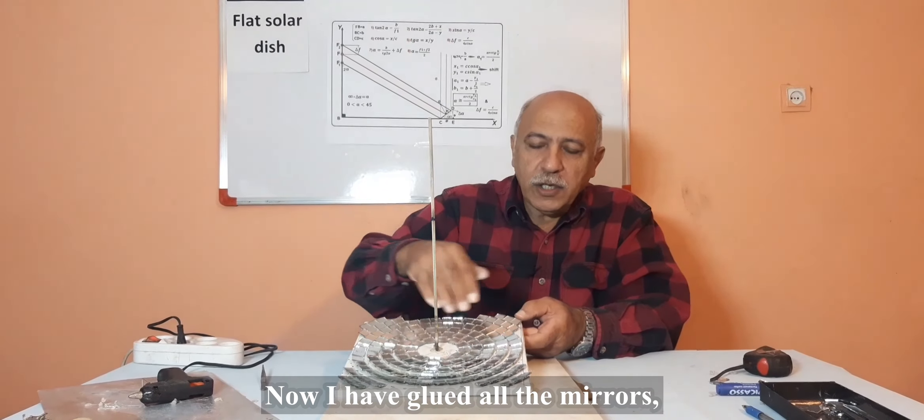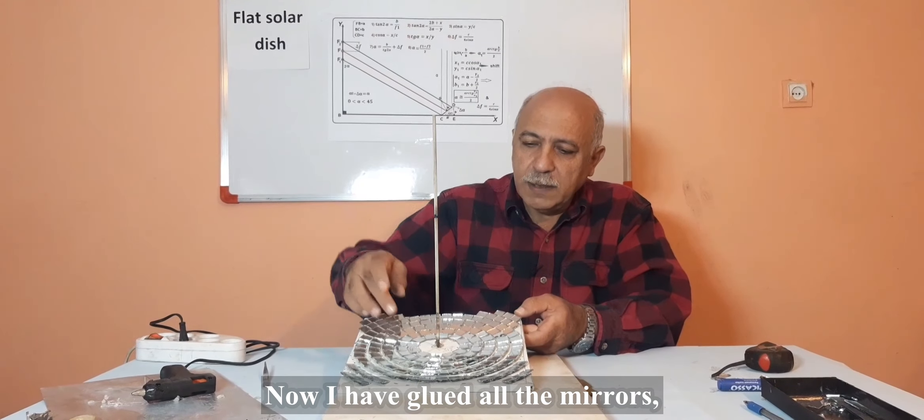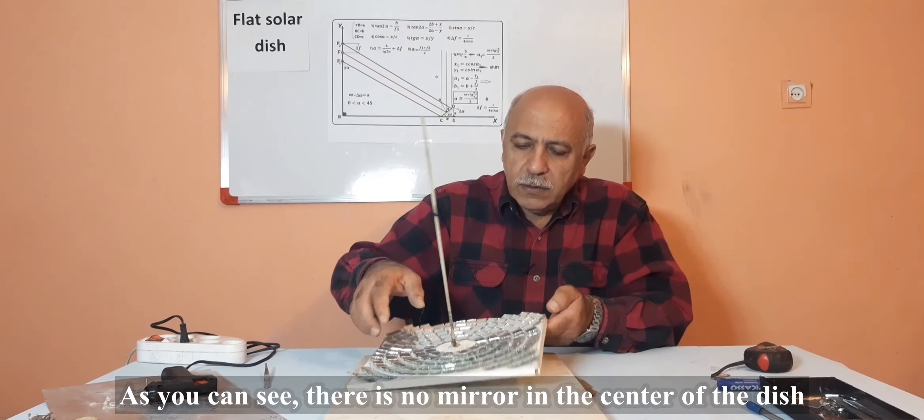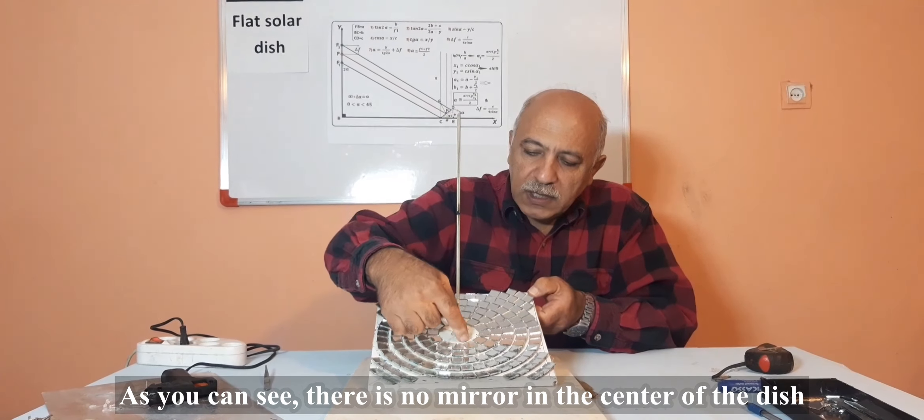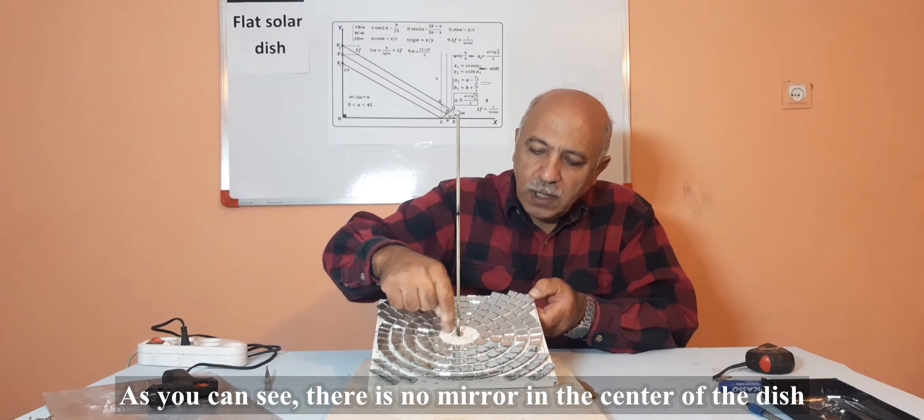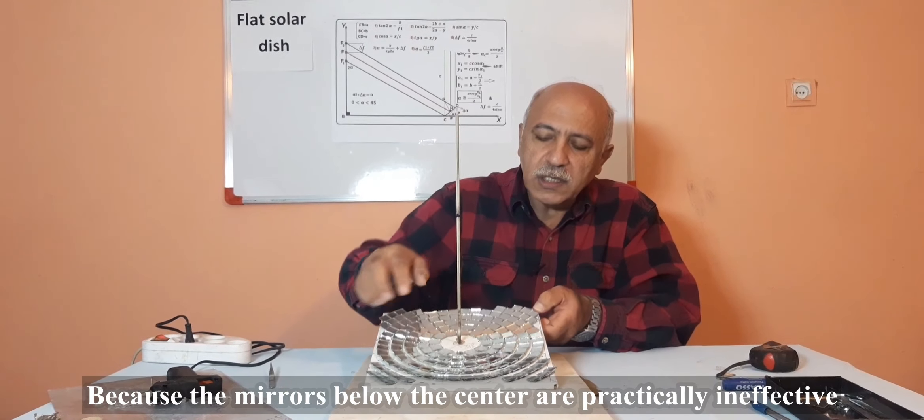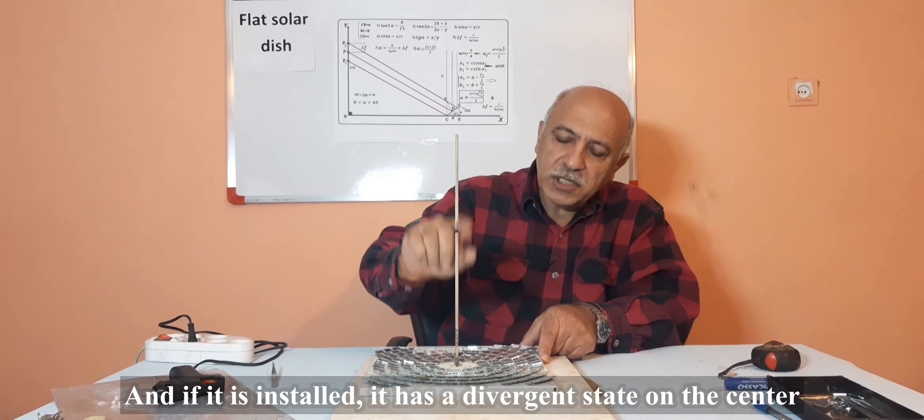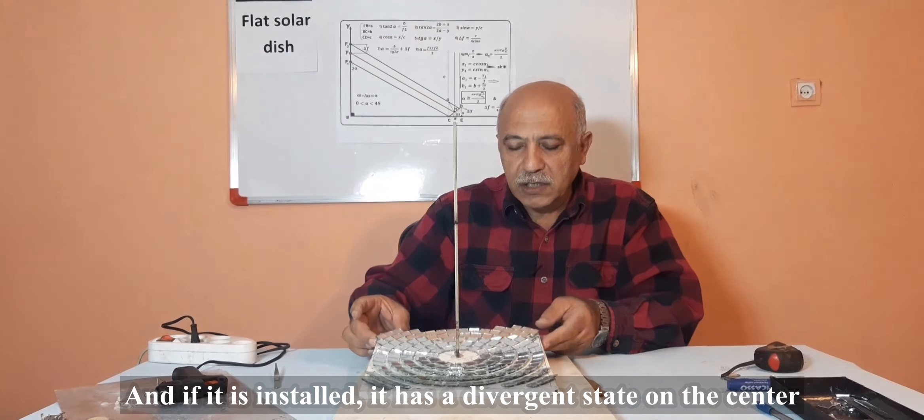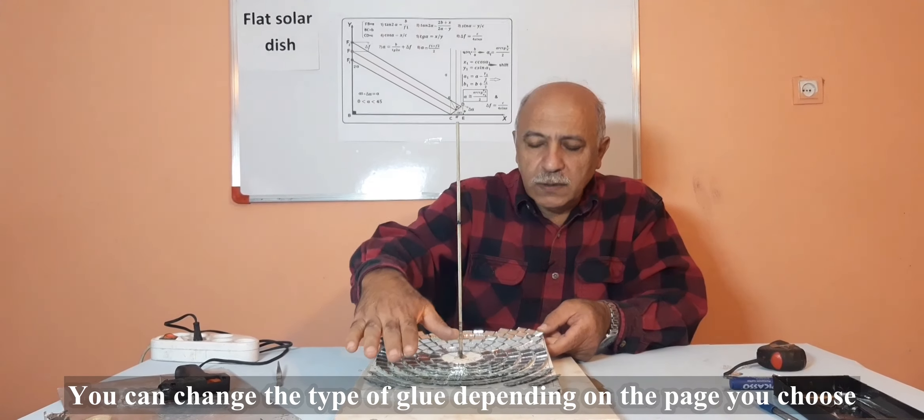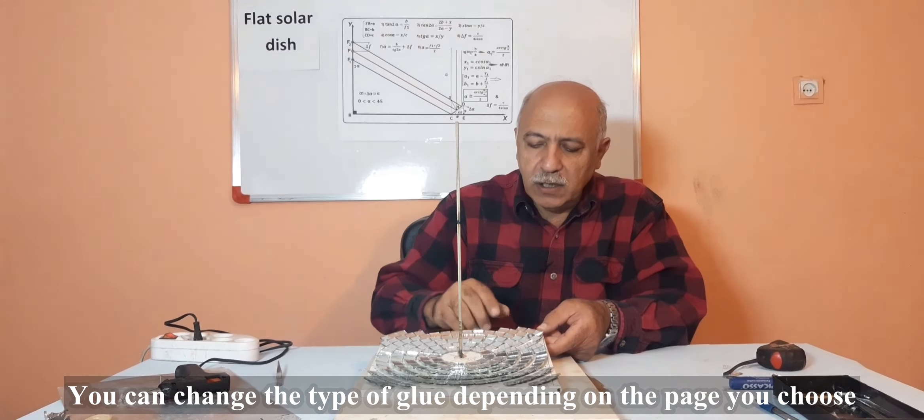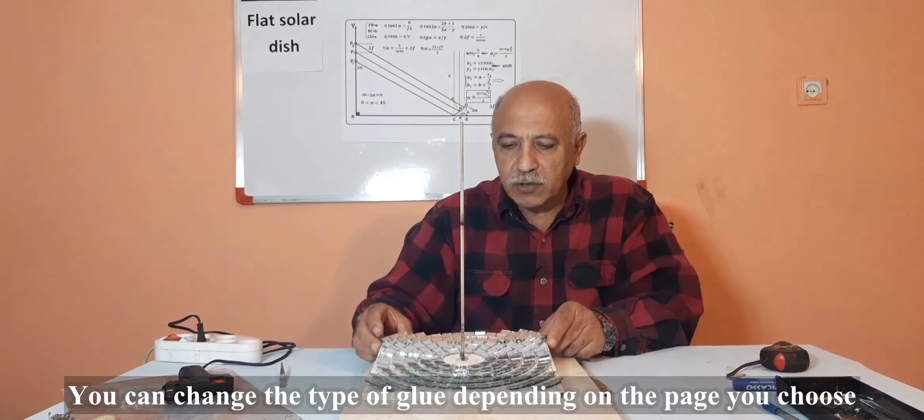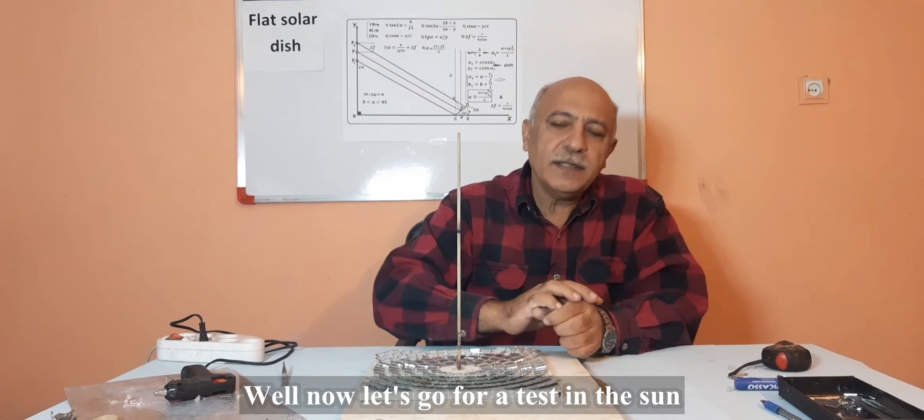Now I have glued all the mirrors. It took about 2 hours. You can see there is no mirror in the center of the dish because the mirror below the center is particularly ineffective, and if I install it, it has a divergent state on the center. You can change the type of glue depending on the page you choose.